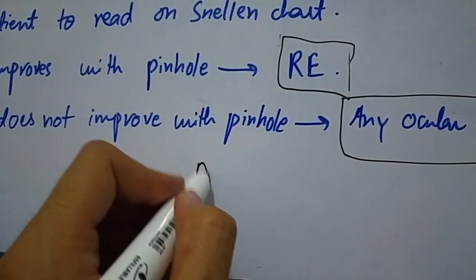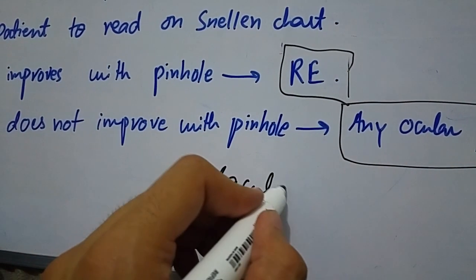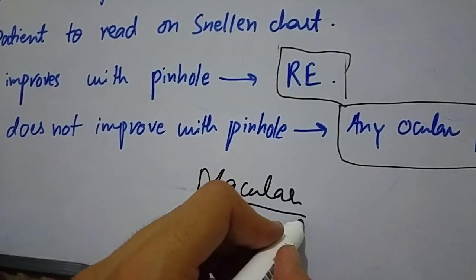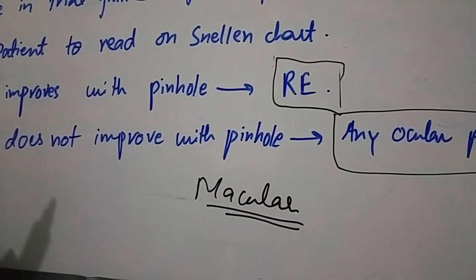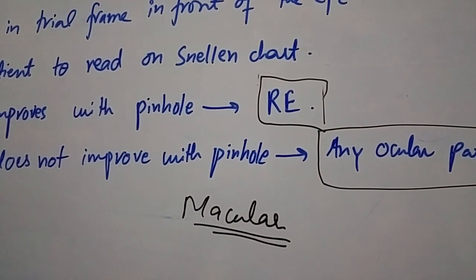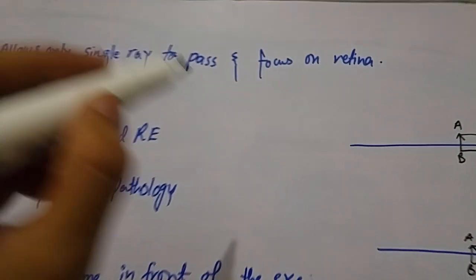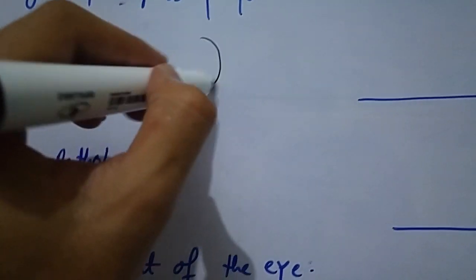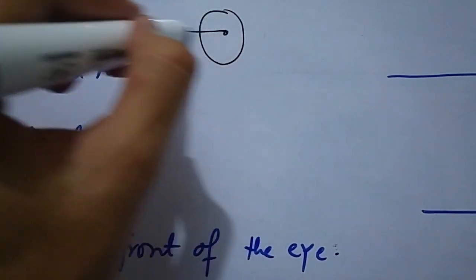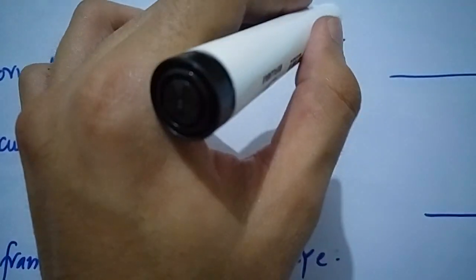But do remember that in case of macular diseases, visual acuity with pinhole is even worse as compared to unaided visual acuity. This is because pinhole basically allows only a single ray from the center to pass and focus on the macula.